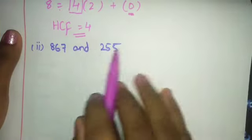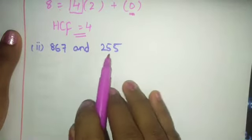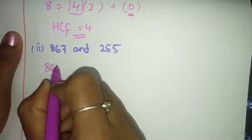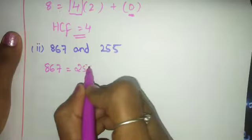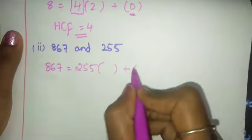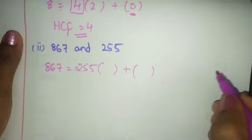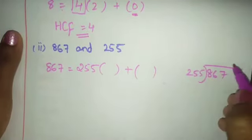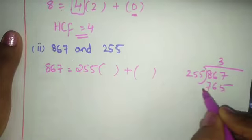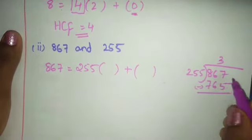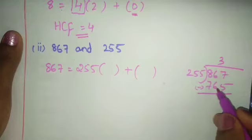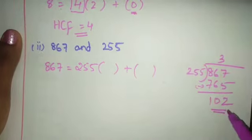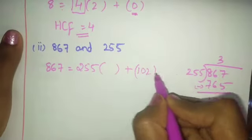Next subdivision: find HCF of 867 and 255. Take the greatest number. 867 = 255 × 3 + remainder. 255 × 3 is 765. 867 minus 765 gives remainder 102.